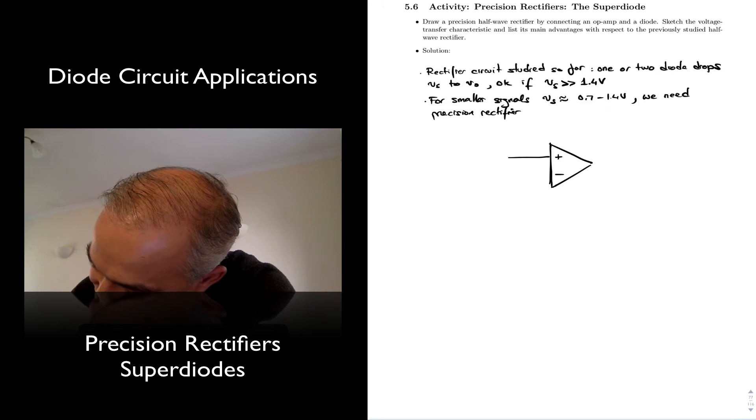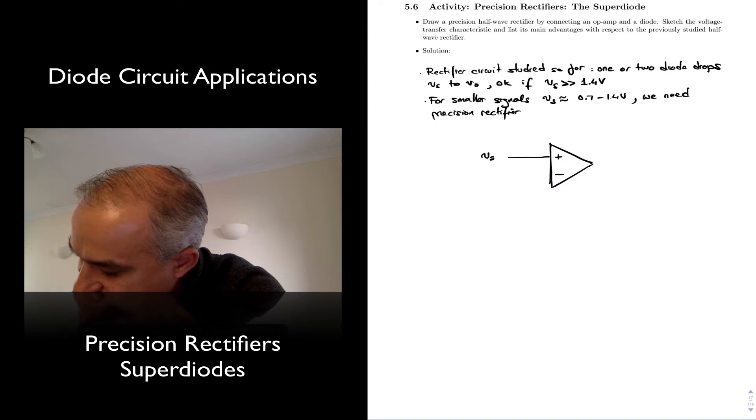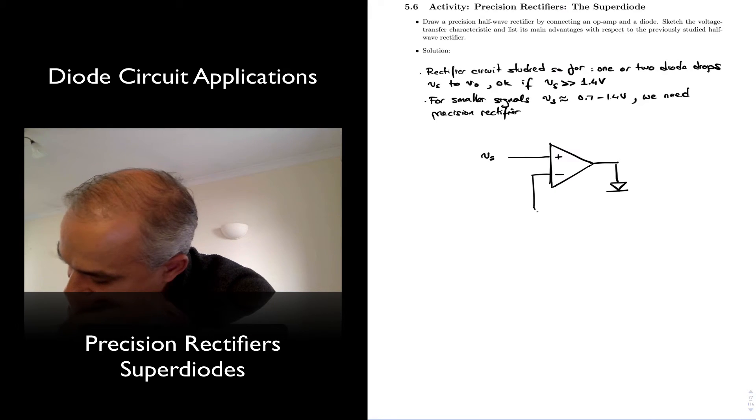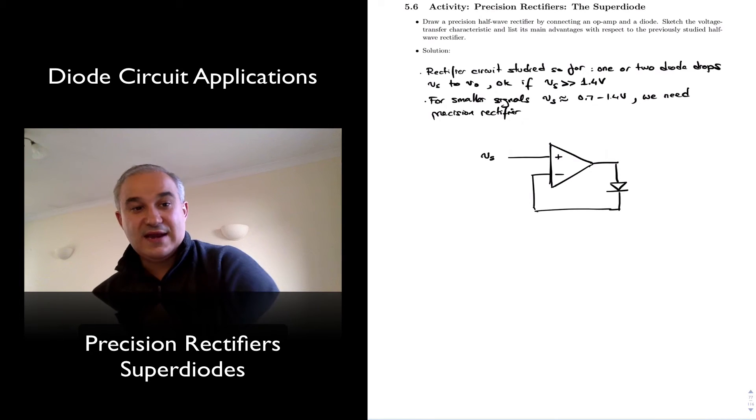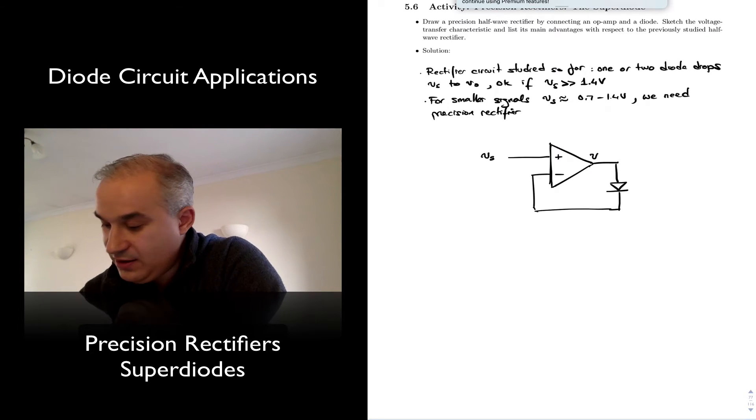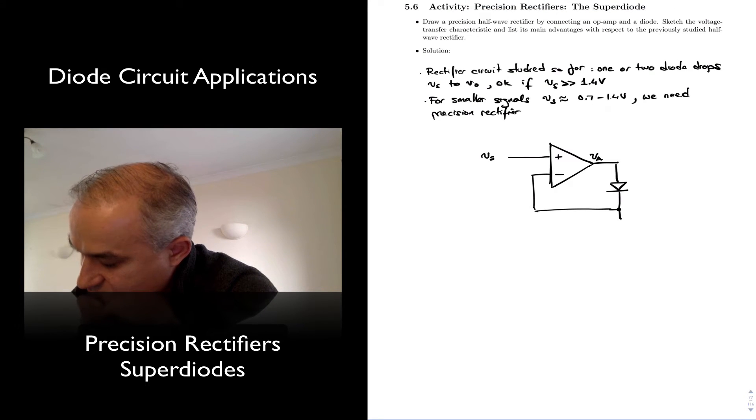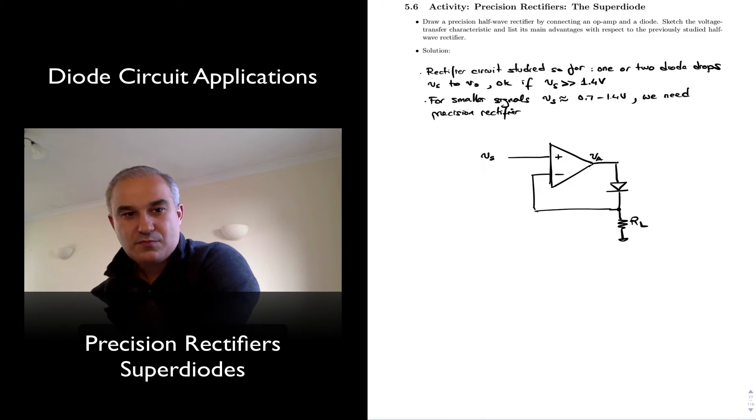We have our source. And let's see what happens if we connect a diode in the negative feedback, like this. And we do have, at least over half of the wave, negative feedback, meaning there is a path from the output. I'm going to call this VA to the negative input. This is where we are going to connect the load, RL.